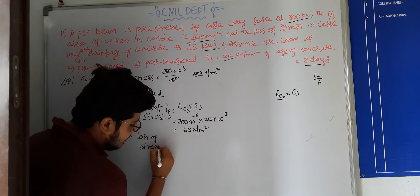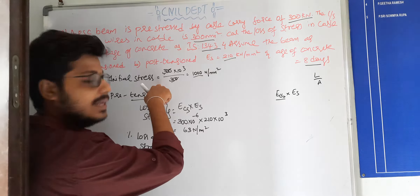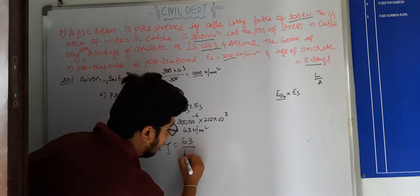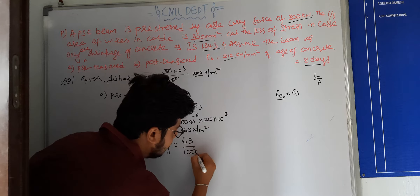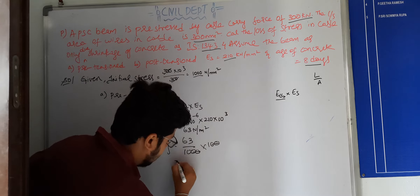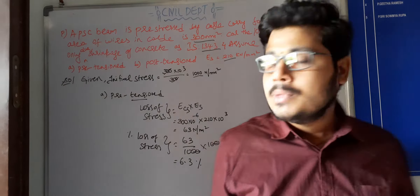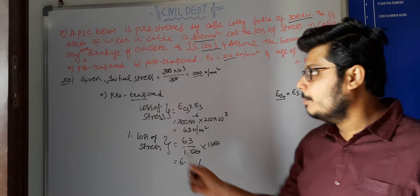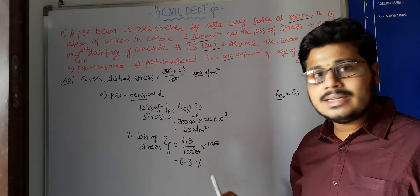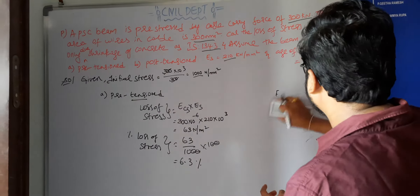Since the percentage loss of stress is asked: Percentage loss = (Loss of stress / Initial stress) × 100 = (63 / 1000) × 100 = 6.3%. So the pre-tension percentage loss of stress is 6.3%.